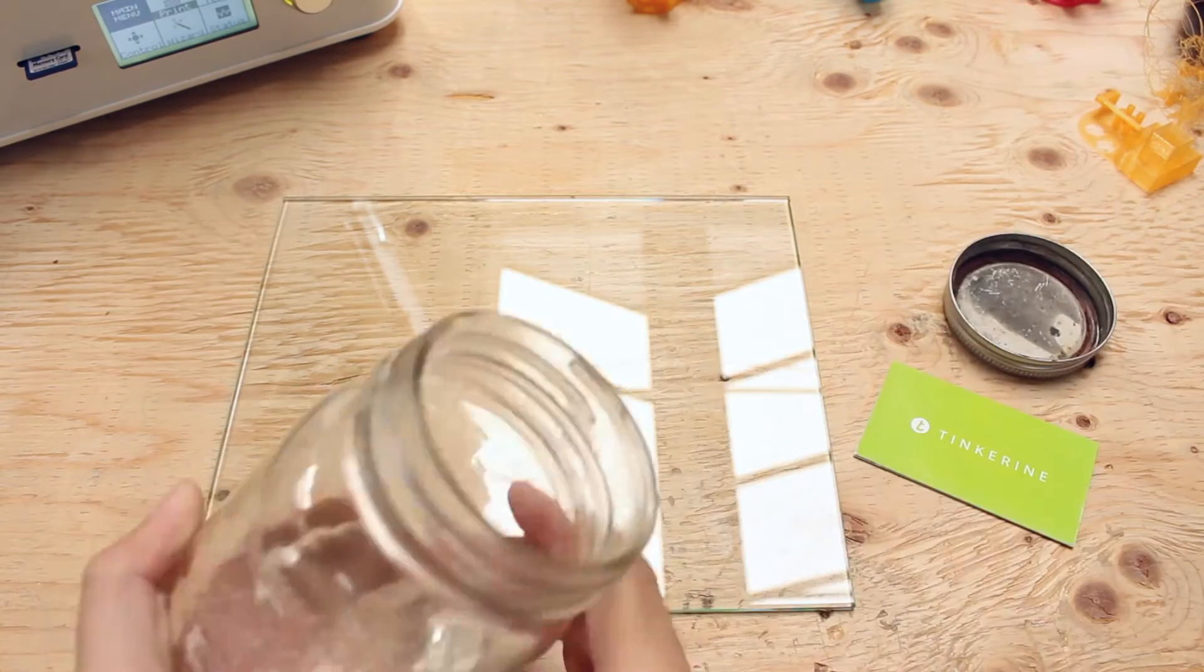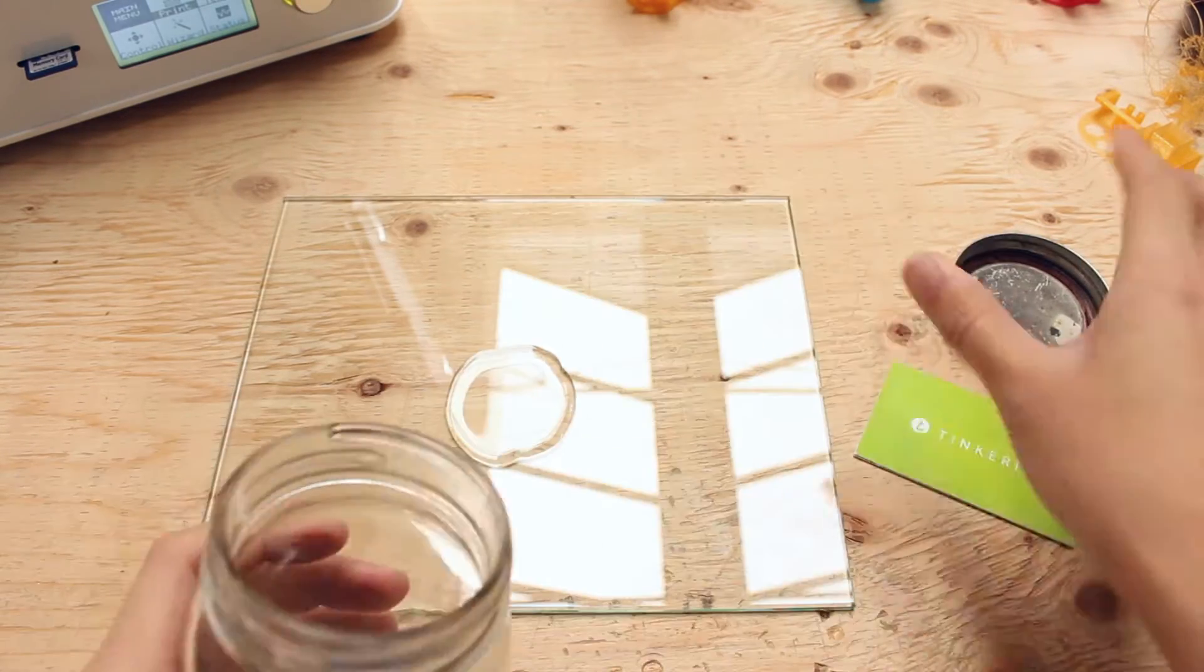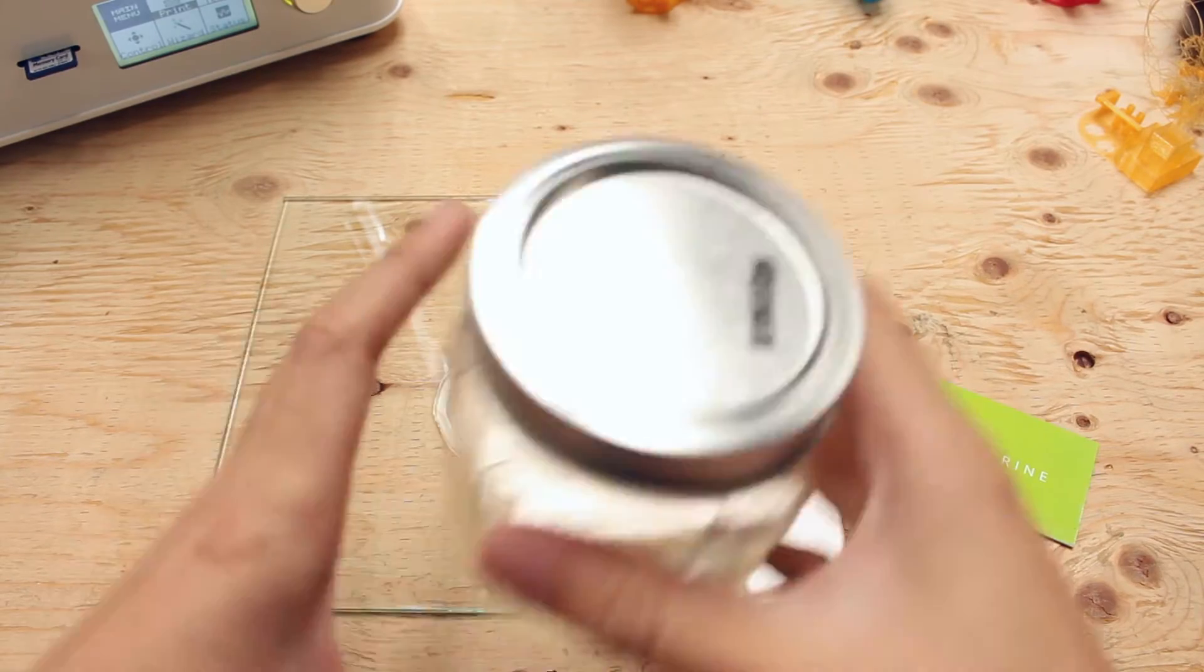Pour a good amount of PVA sludge onto the bed. Spread it around with a business card and then wait for it to dry.